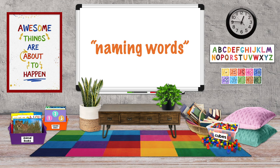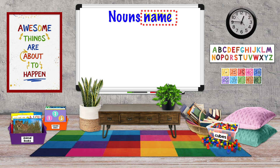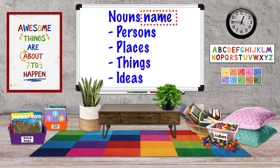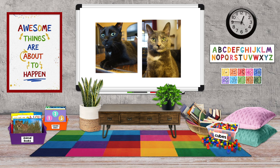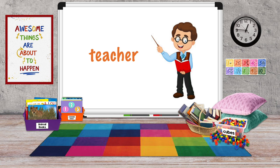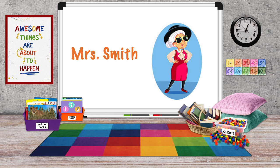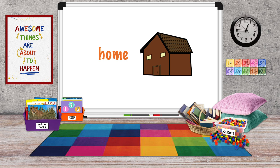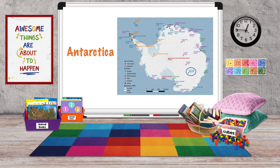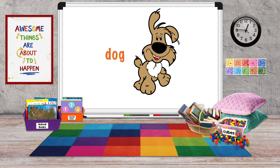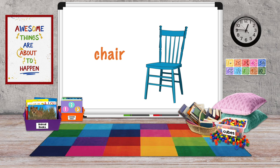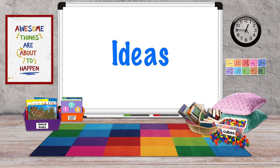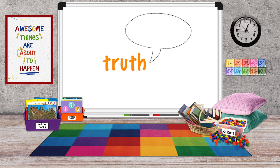Some people call nouns naming words. That's because nouns name persons, places, things, and ideas. Recently I've noticed that animals is placed in the list to separate them from mere things — I don't think of my cats as things. Nouns name persons: teacher, baker, Mrs. Smith. Nouns name places: home, the store, Antarctica. Nouns name animals: dog, cat, turtle. Nouns name things: rock, chair, building. And nouns name ideas: honesty, truth, love.